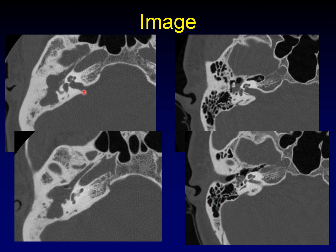In patient number one, the ossicles have been completely eroded away — there are only little wisps of bone left behind. In patient number two, the ossicles are intact. You can see the malleoincudal joint here, and you can see the incudostapedial joint here.